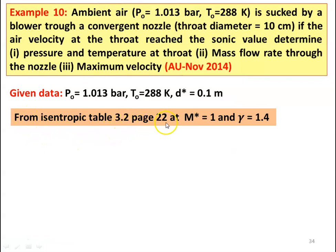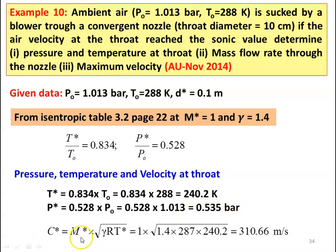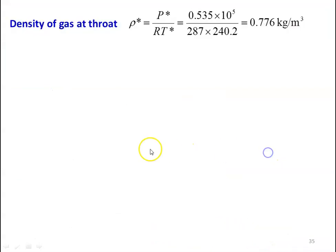From isentropic table 3.2 page number 22 at M star equal to 1 and gamma equal to 1.4 for sonic condition: T star by TO equal to 0.834 and P star by PO equal to 0.528. Pressure, temperature and velocity at the throat section: T star equal to 0.834 into 288 equal to 240.2 Kelvin, P star equal to 0.528 into 1.013 equal to 0.535 bar. C star equal to M star into square root of gamma R T star, which is 1 into square root of 1.4 into 287 into 240.2 equal to 310.66 meters per second. Density: rho star equal to P star by R T star equal to 0.535 into 10 power 5 divided by 287 into 240.2 equal to 0.776 kilograms per cubic meter.